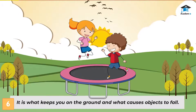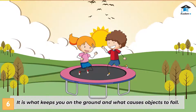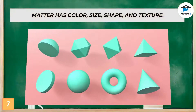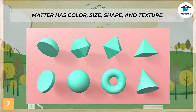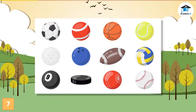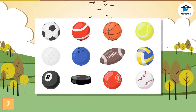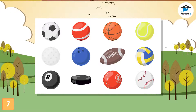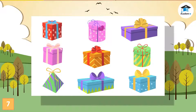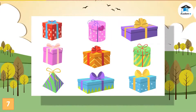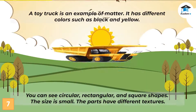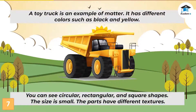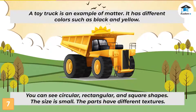It is what keeps you on the ground and causes objects to fall. Matter has shape — an object can be square, rectangular, round, triangular, or another shape. Size is another characteristic of matter; it describes how big, small, tall, or short an object is. Matter has color — it can be red, orange, yellow, etc. Texture and hardness are other characteristics of matter; it can be smooth or rough, and hard or soft. Look at the toy truck in the picture — can you describe it?